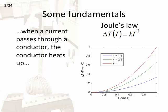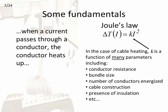So, some fundamentals of cable heating. Joule's law tells us that when a current passes through a conductor, the conductor heats up. In one of its simplest forms, Joule's law describes the temperature rise in terms of a constant K and the square of the current through the conductor. It is this constant K that we are most concerned with. In the case of cable heating, K is a function of many parameters, including conductor size, bundle size, number of conductors energized, and presence of insulation, among other things.